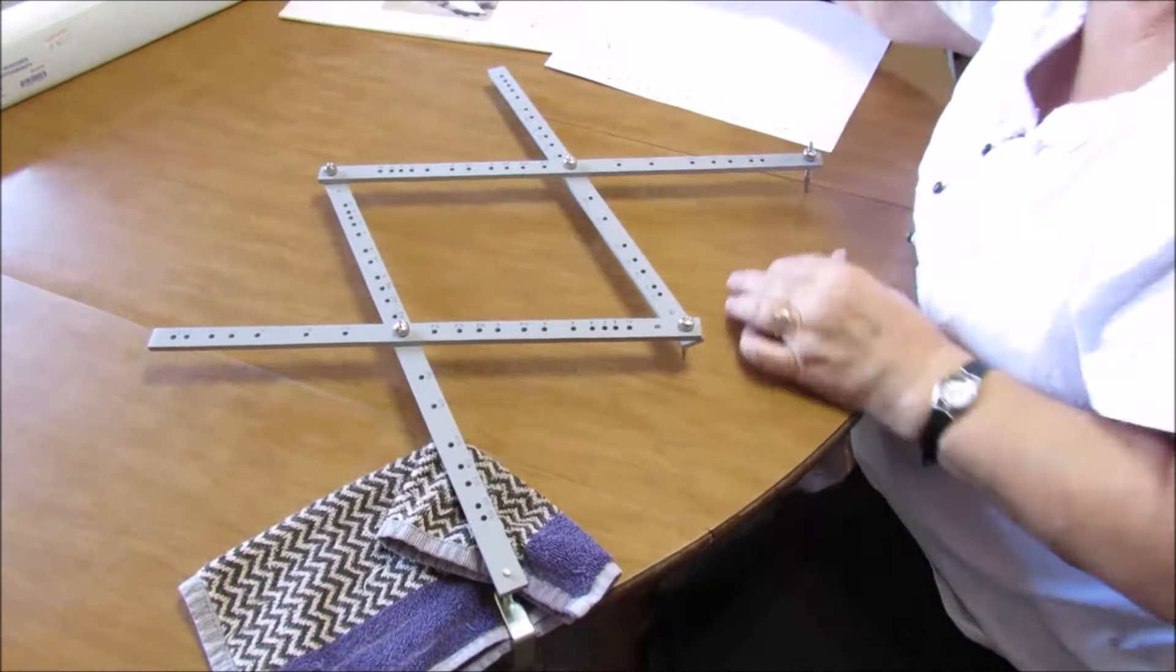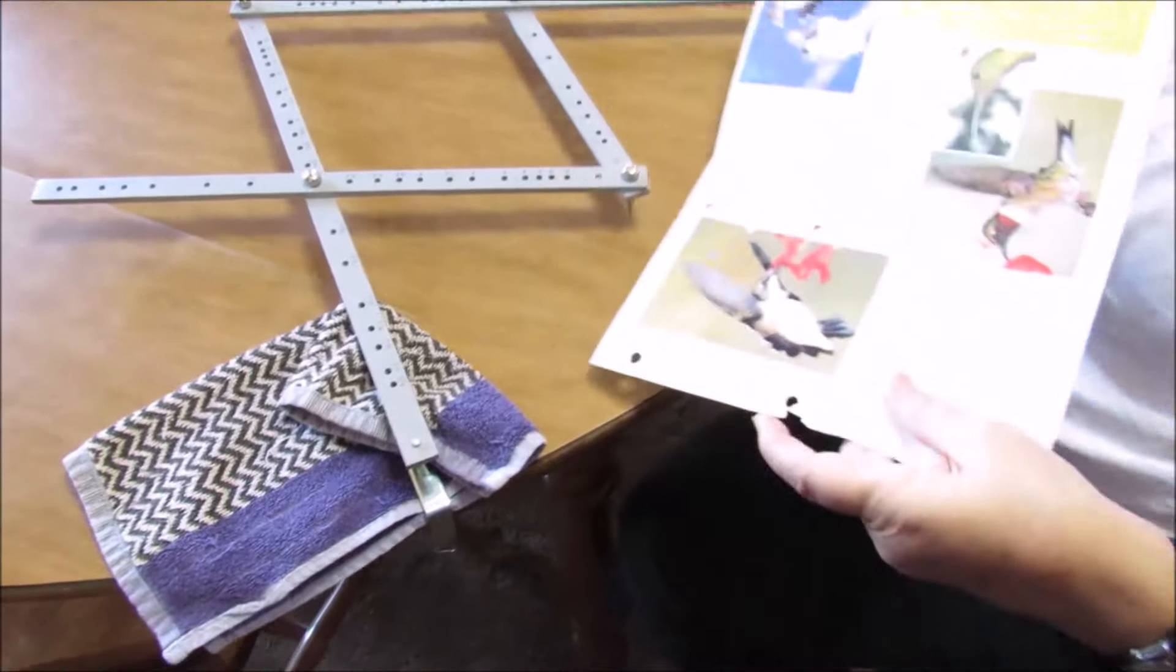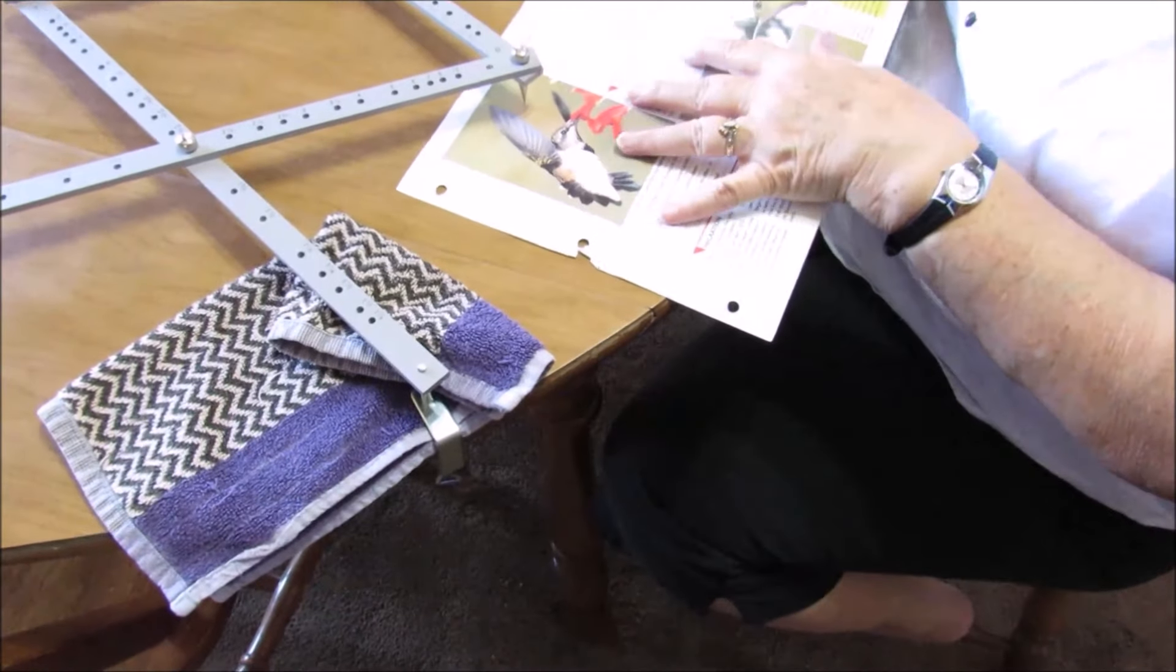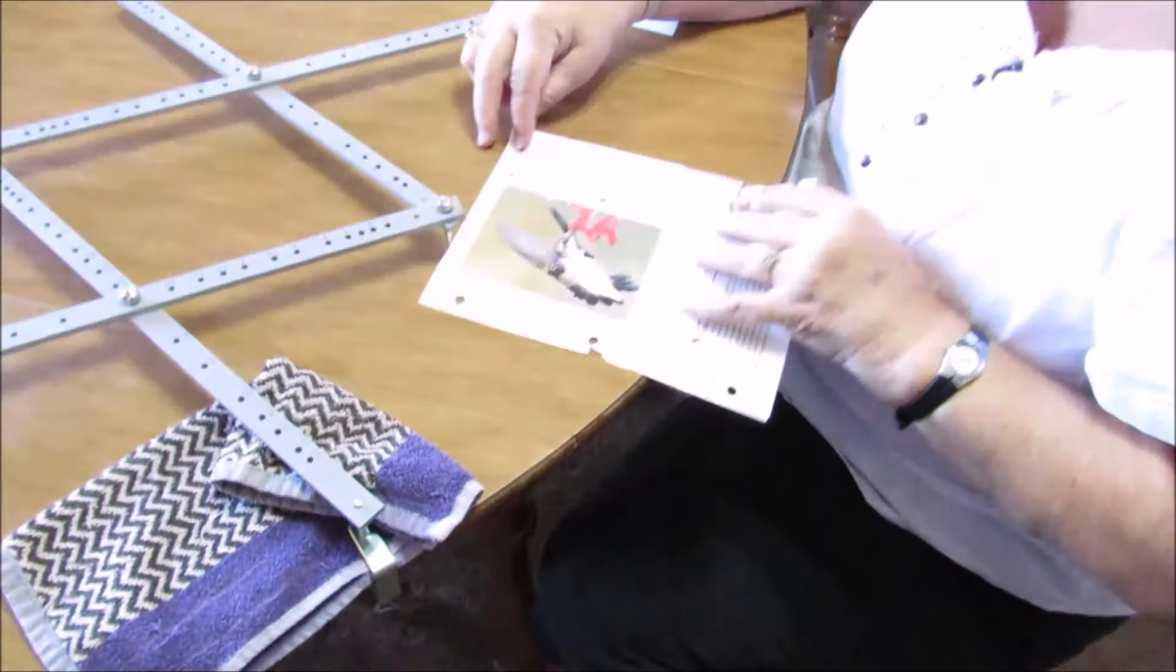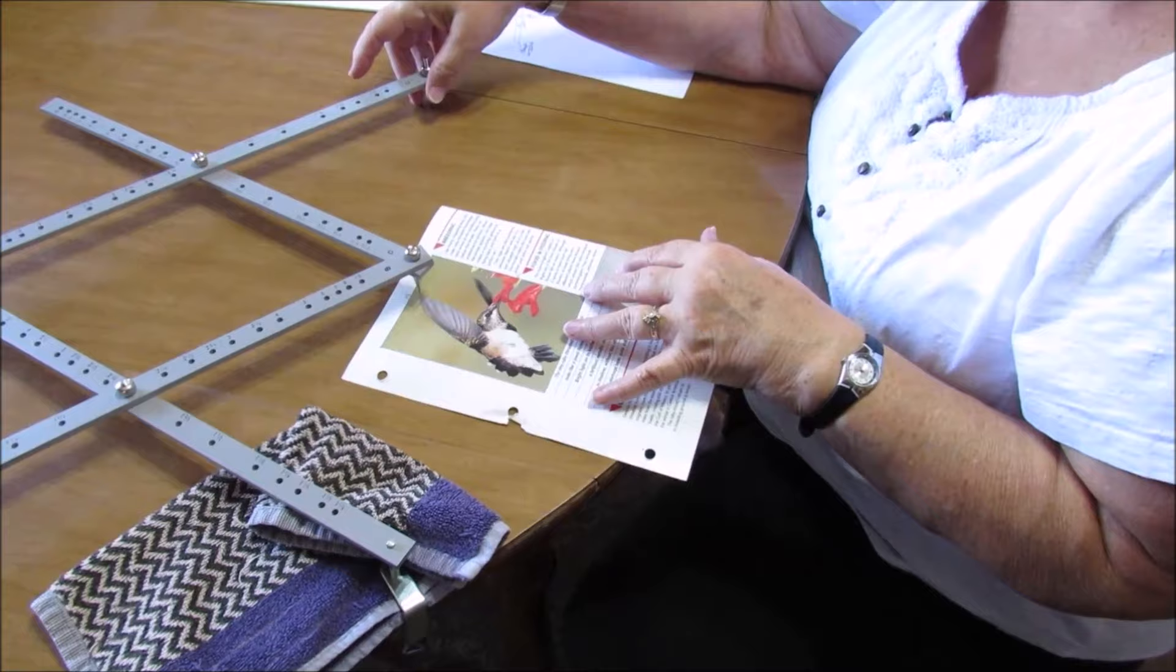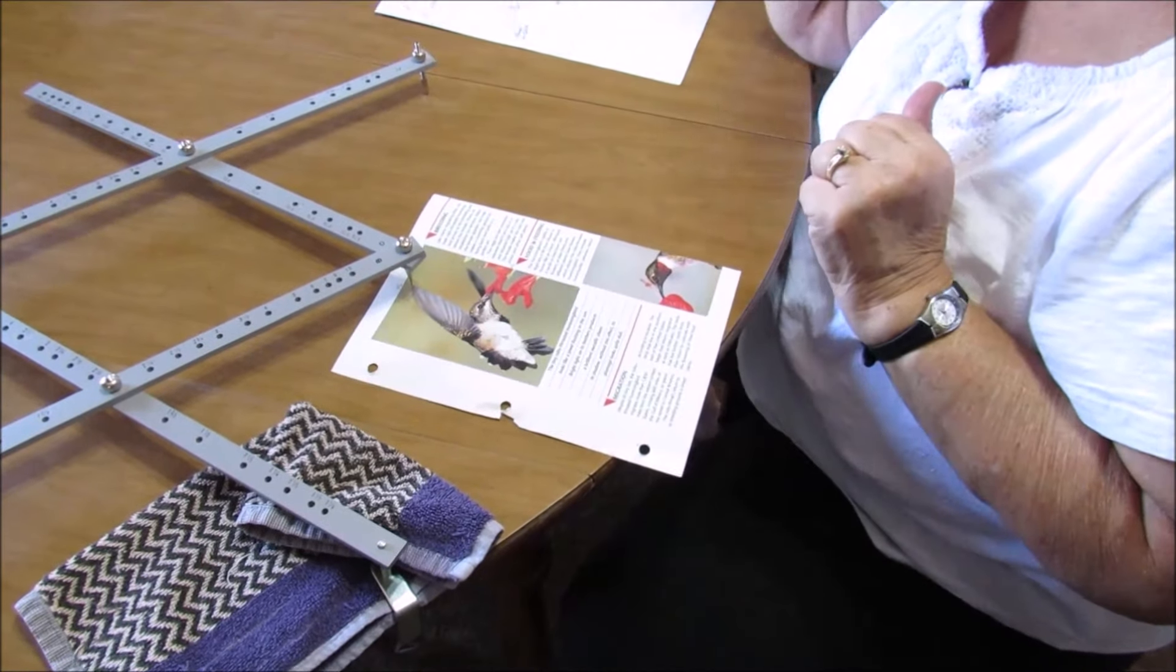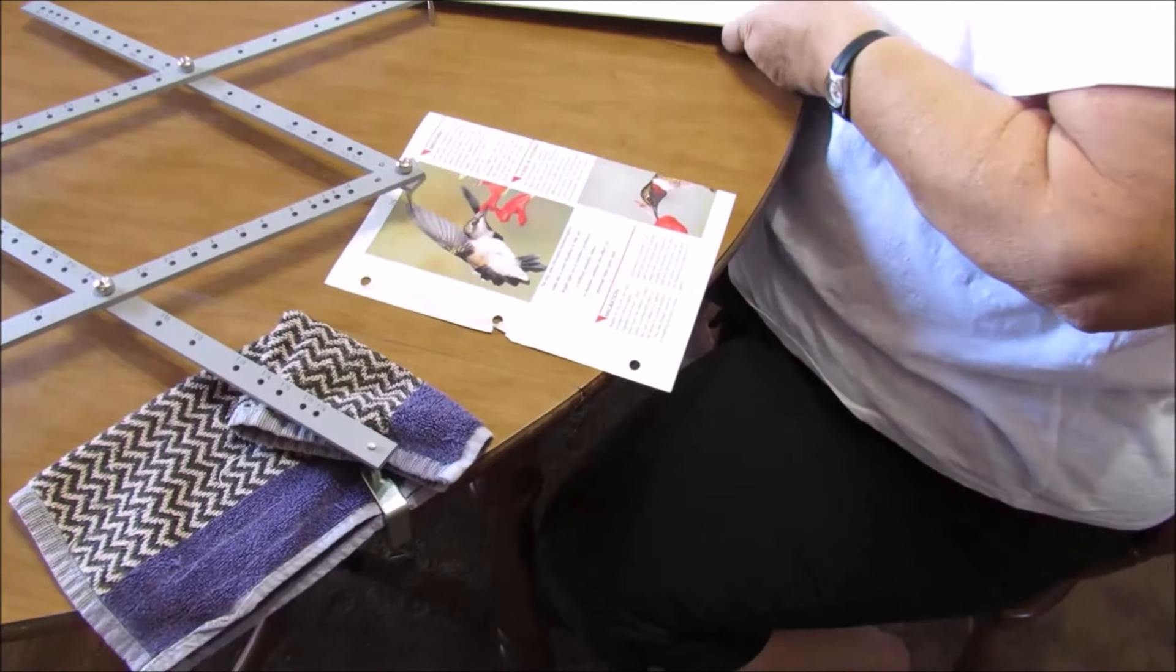Okay, you take the small picture, put it under the stylus, position it, and then take the art board and position it.